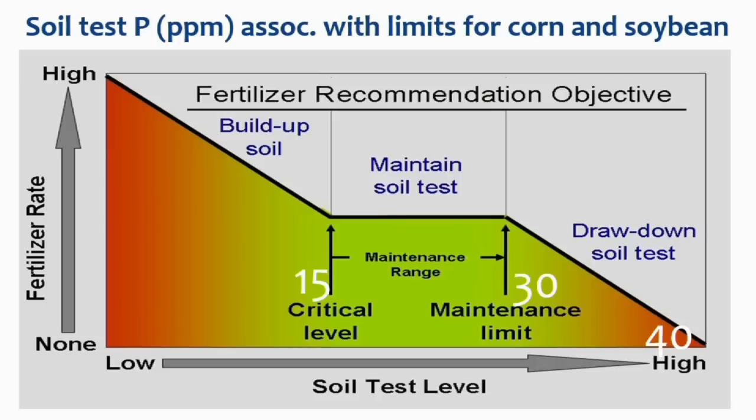Within the maintenance range, we shouldn't expect a yield response to applied phosphorus or potassium — thus no profit in that year. That philosophy was put in place to give farmers flexibility to skip years when corn prices were low, fertilizer prices were high, or weather prevented field applications. The maintenance range for phosphorus is 15 parts per million wide. To change soil test by 15 ppm, you have to remove 300 pounds of P₂O₅ per acre. A 200-bushel corn crop removes about 75 pounds of P₂O₅ — so it takes several years of crop removal to move out of the maintenance range.